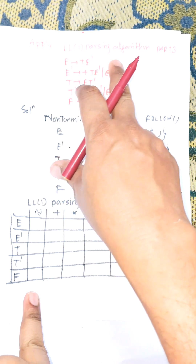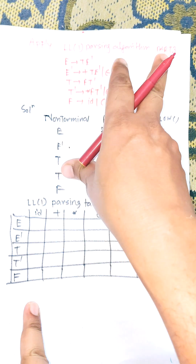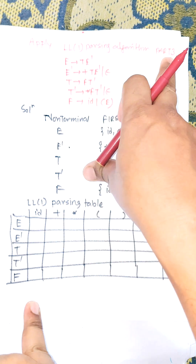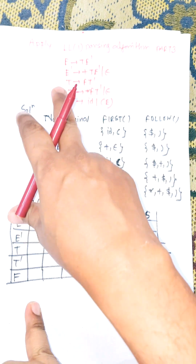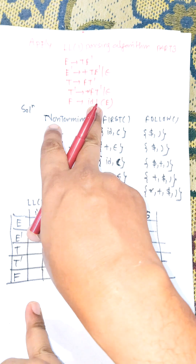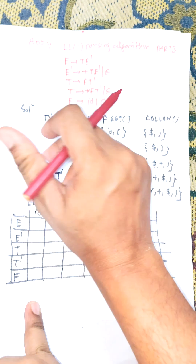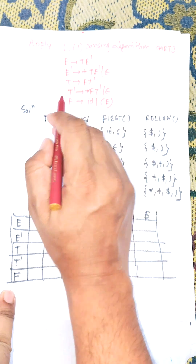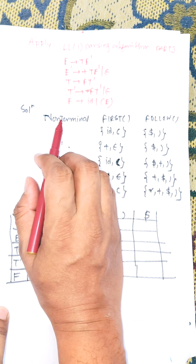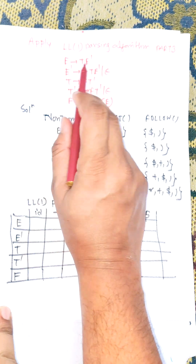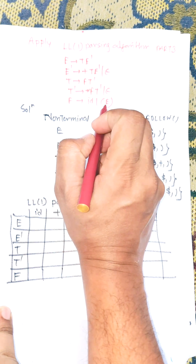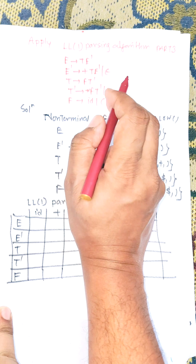In this video, I am going to discuss the LL(1) parsing algorithm, and this is Part 3. If the grammar is given, we need to construct the parsing table. The grammar is already a left-recursive and left-factoring free augmented grammar.